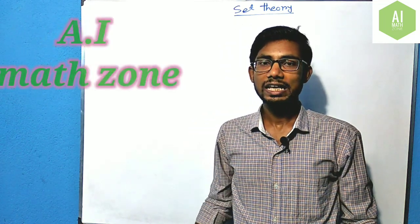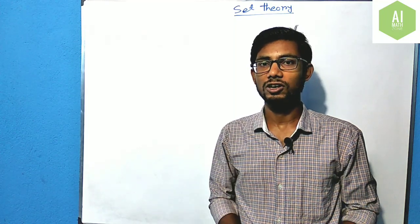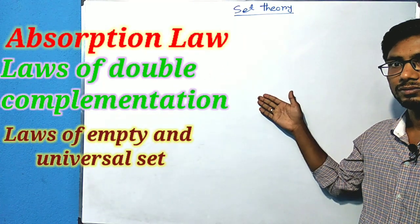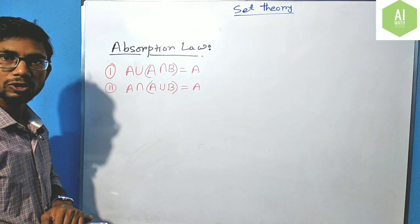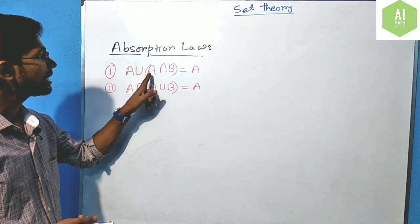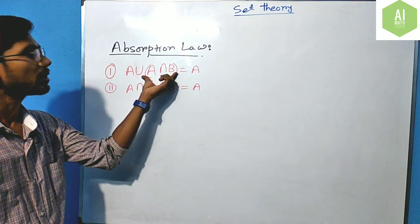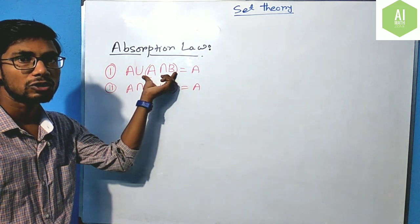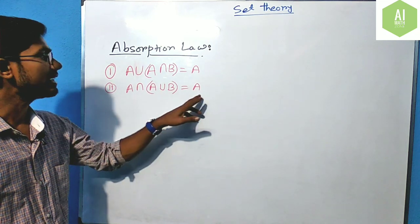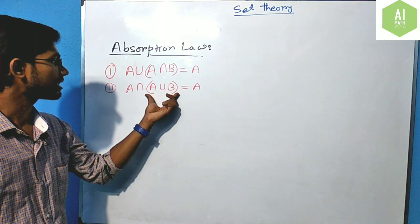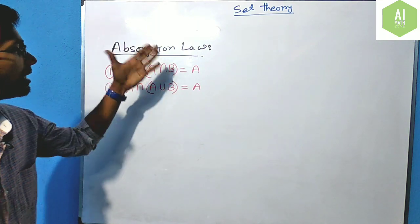Hello guys, welcome to my channel. I am Adjon and this is Aminun Islam. In the last video I discussed De Morgan's law, and today's topics are the absorption laws. These two laws are known as the absorption law because A union (A intersection B) equals exactly A — this part is totally absorbed. That's why it is called the absorption law.